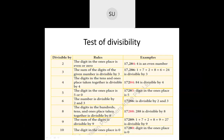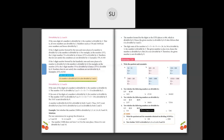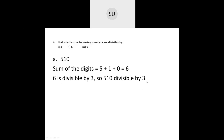Now let's solve the problems in your textbook. We did questions 1, 2 and 3 in the last class, so today we'll do question number 4: test whether the following numbers are divisible by 3, 6 and 9. The first number is 510. We find the sum of digits: 5 + 1 + 0 = 6. Since 6 is divisible by 3, 510 is divisible by 3.